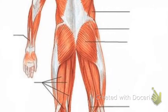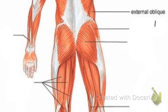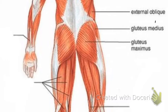Moving further down the back, you have your external oblique again — it helps with rotating your torso or trunk. Gluteus medius is an abductor, so it helps you move your leg away from your body on a single plane. Gluteus maximus helps you with extension of your hips and is really part of your core, so it also helps with spinal stability.